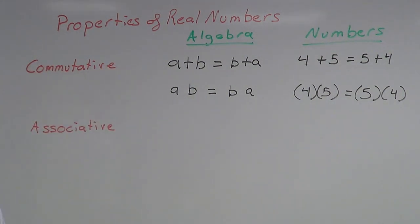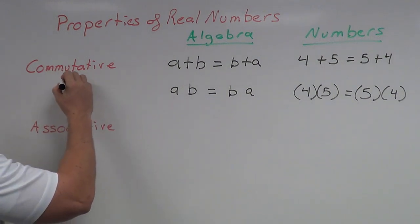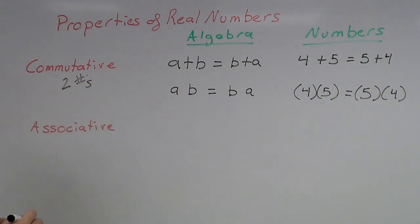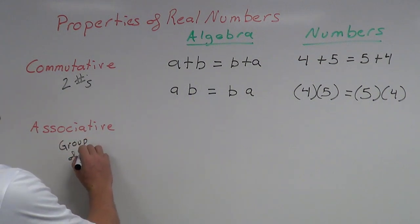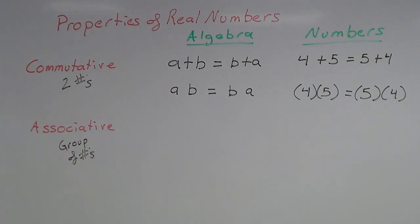Next is the associative property. The commutative property is about two numbers — it doesn't matter what order we add or multiply two numbers. You can think of commutative as how we add or multiply two numbers, as opposed to the associative property, where we actually have a group of numbers. That's the big difference between the two: commutative deals with two numbers, associative deals with a group of numbers.